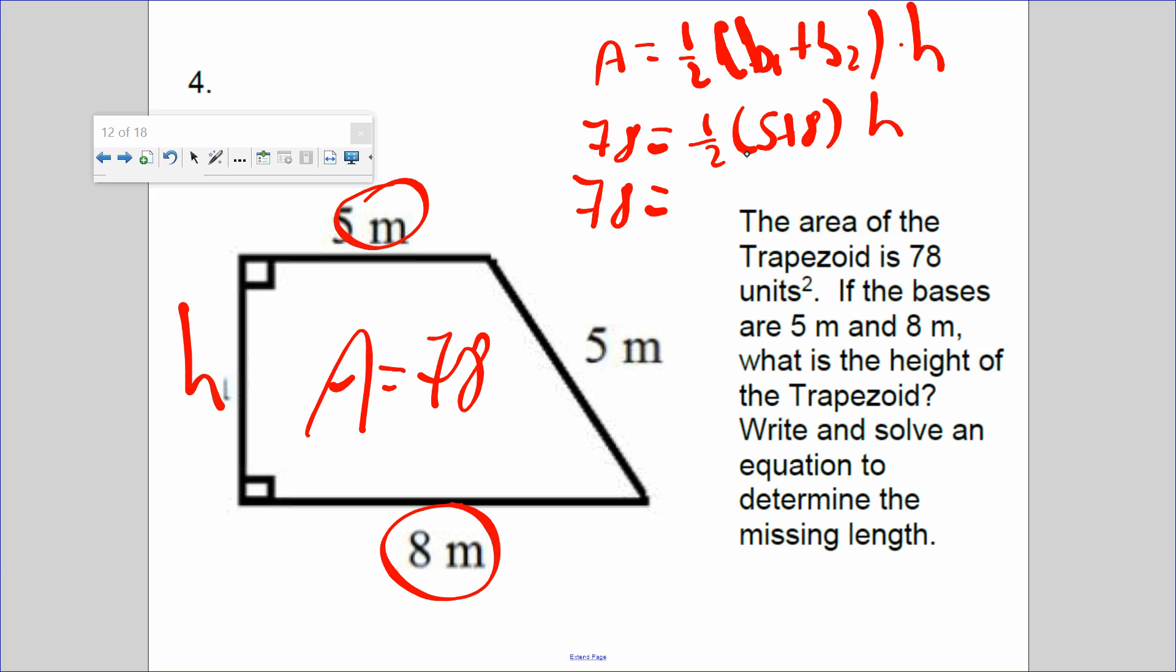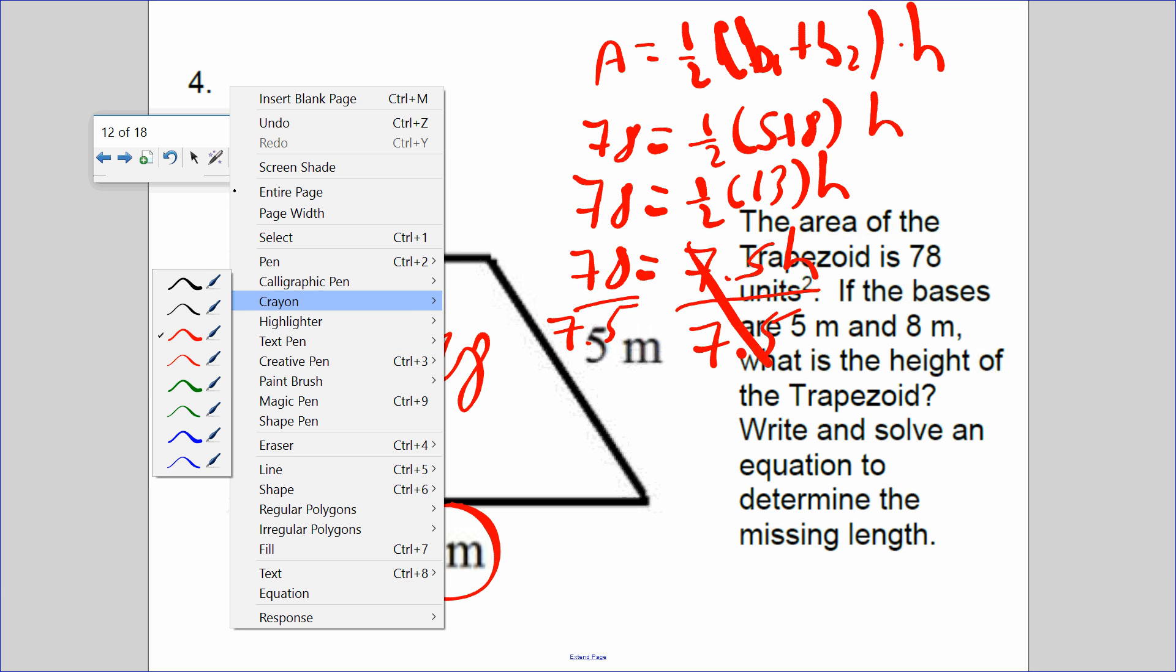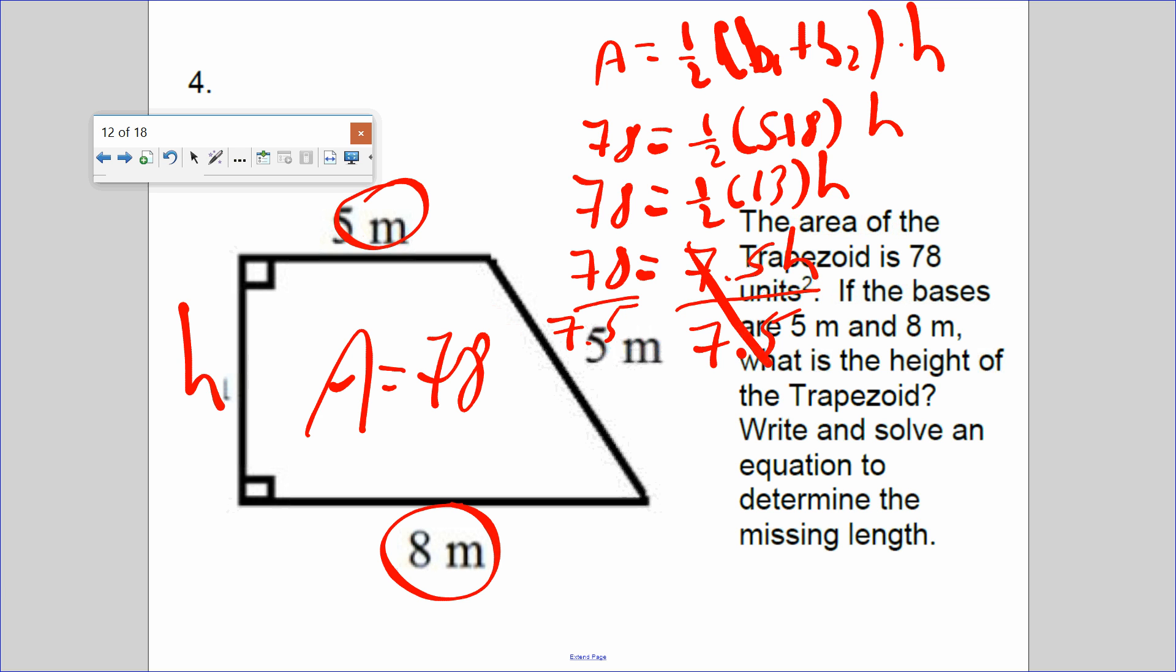If I add up the bases, I get 13 plus half of 13, 7.5 times height. How do you solve this equation? How do you solve for h? You have to do the inverse operation of multiply with divide. This cancels. We balance it out on the other side. So what is 78 divided by 7.5? I don't like working with decimals, so I'm going to turn this to a whole number. Move the decimal, so 780 divided by 75.